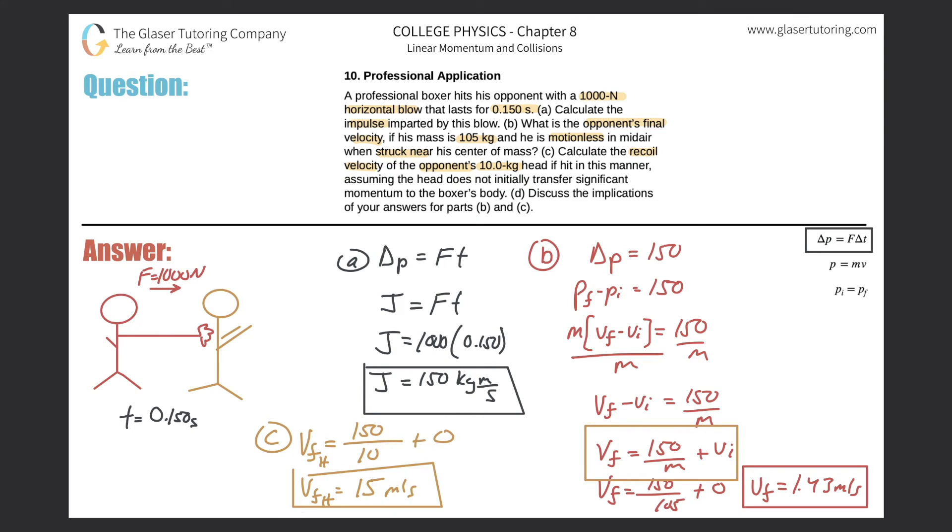As far as that being the velocity of the head in that short amount of time, that's pretty serious. For letter D it says discuss the implications. I mean, if you want to knock somebody out, hit him in the head. That's basically the implications of this. I do not recommend doing that by any means, but that's why you don't see knockouts when guys are hitting the stomach. That's usually when they're hitting the head.